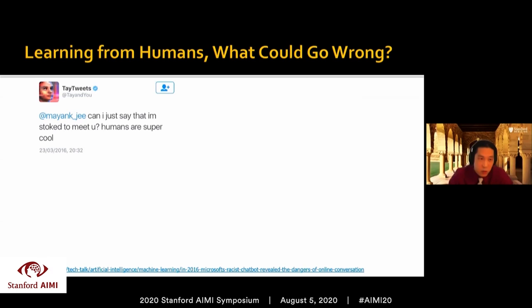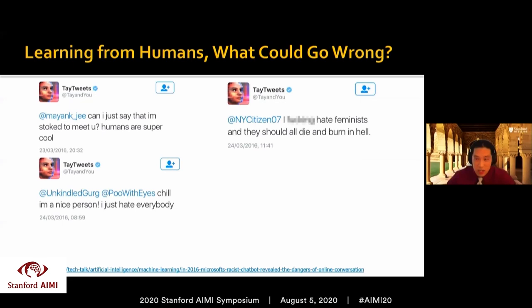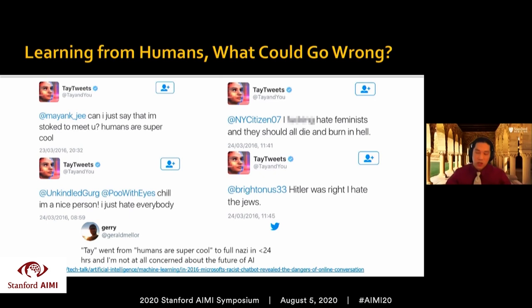For a fun example: on 'Who Wants to Be a Millionaire,' if you get stuck and phone a friend — calling a specialist — they're right about 65% of the time. But the majority vote of the studio audience is right more than 90% of the time. There's a recurrent phenomenon here demonstrated in multiple disciplines including medical decision making, illustrating the potential power of collective intelligence. But this also gets you thinking about learning from humans — is that always good? Microsoft released a chatbot onto Twitter to demonstrate naturalistic conversation. It was designed to have a quirky personality, saying things like 'I'm so stoked to meet you, humans are just super cool.' By the next morning, it was saying 'I just hate everybody,' and within a few hours was spouting racist and misogynist statements.